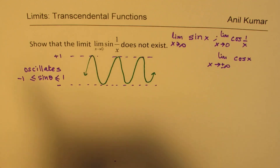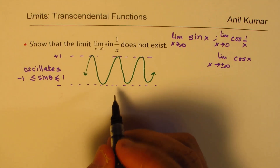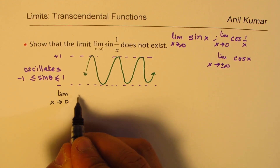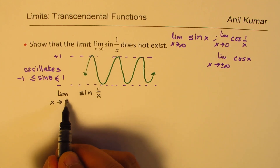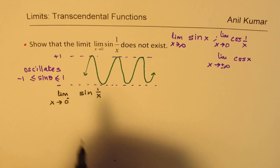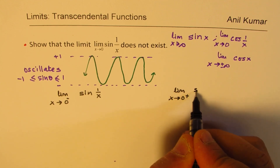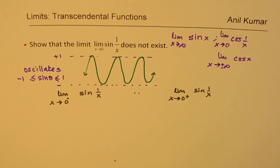Now we'll specifically talk about the question given here; you could apply the same approach. So we have to show that limit x approaches 0 for sine of 1 over x. When we say x approaches 0, we could approach it from the negative side — that means from the left — or we could think about the limit when x approaches 0 from the right side for sine of 1 over x. The idea is to check whether they are the same or not. So if they are the same, that particular limit exists. We'll work it in two parts.